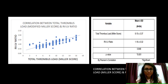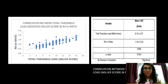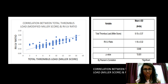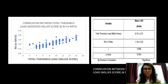This slide shows the correlation between total thrombus load and right ventricular function. Thrombus load was calculated using the modified Miller score and right ventricular function was assessed using the RV to LV diameter ratio. The p-value was less than 0.001, which is statistically significant, demonstrating a strong correlation between thrombus load and right ventricular function.